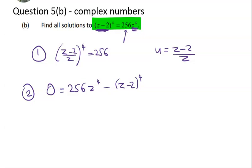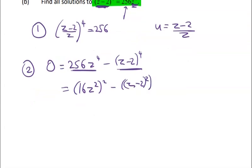So then what I notice is that this is a square and this is a square. I'm going to do this method first and I've got 16z squared squared minus (z-2) squared squared. So doing our year 10 difference of two squares on it we get two quadratics and then we can solve those two quadratics.